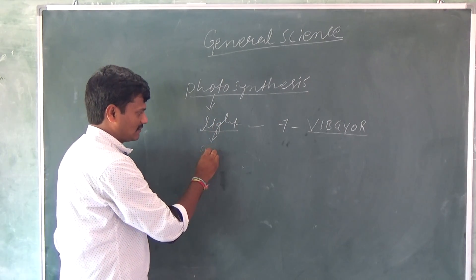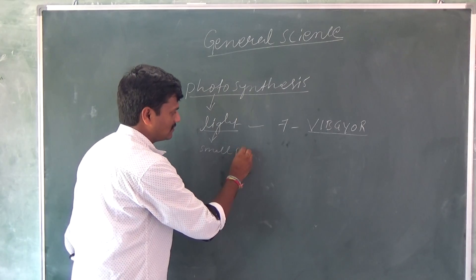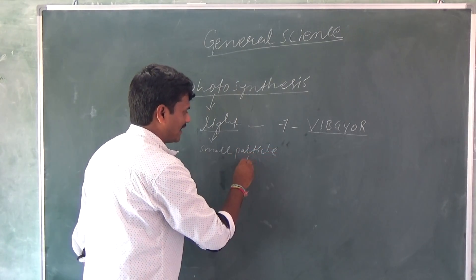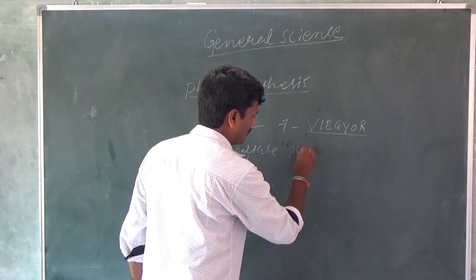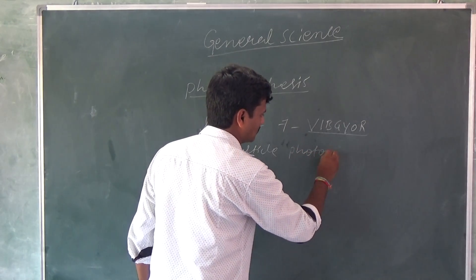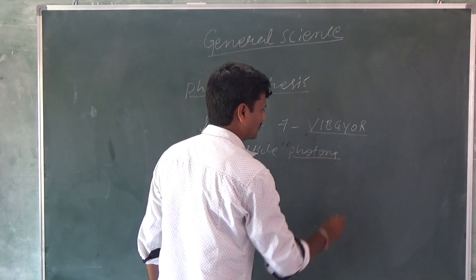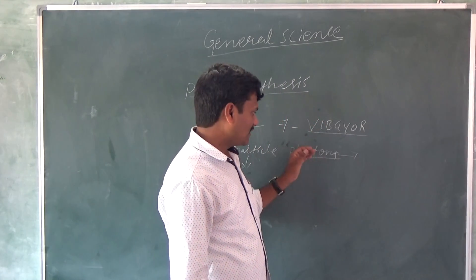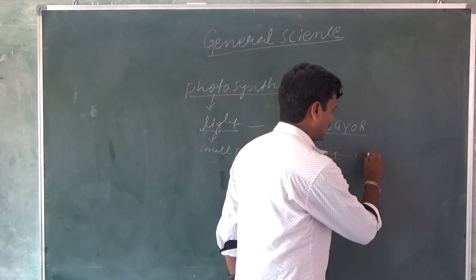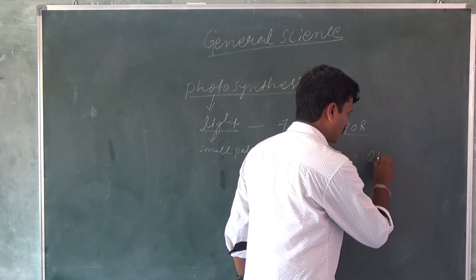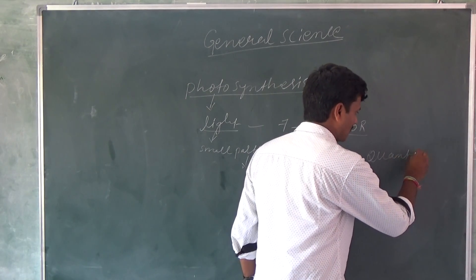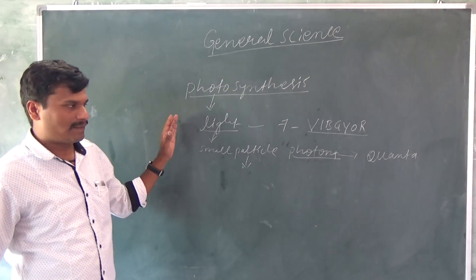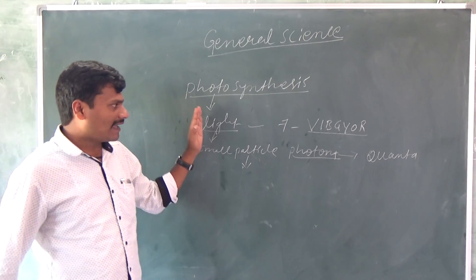Not only this — light also consists of small particles. These particles are called photons, not protons — photons. These small particles called photons carry energy, that is called energy packets. We can also refer to these as quanta. This light is required for the plants.